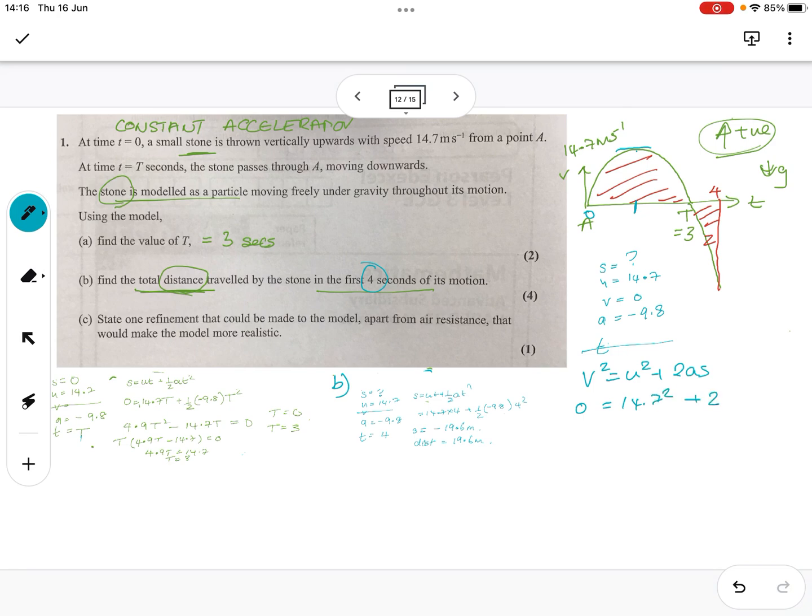So, using that, the one without time is v squared equals u squared plus 2as. V squared is zero. 14.7 squared plus 2 times minus 9.8 times s, which we don't know. So, we'll have minus 14.7 squared over here equals minus 19.6 s. Divide minus 14.7 squared divided by 19.6. So, 14.7 squared divided by 19.6 will give me a distance of 11.025.